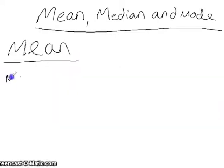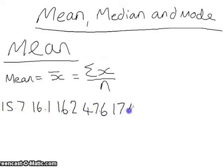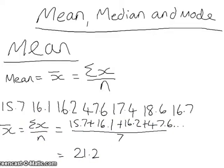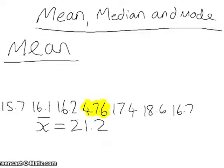Finally, we have the mean. This is written as x-bar and is calculated using the formula sigma x over n. If we take our values and put them into this equation, where sigma x is the sum of all the values and n is the number of values, we get 21.2. However, in this case 21.2 is not representative of our values, as 47.6 drags the mean up.